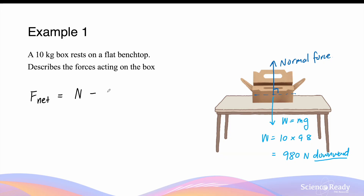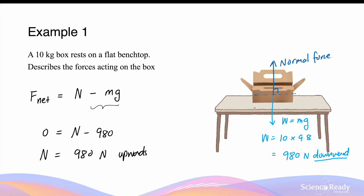The net force is equal to the upward normal force N minus the downward weight force mg. The negative sign in front of mg reflects that forces are vectors with direction — upward forces are positive and downward forces are negative. Because the box is sitting at rest on the bench top and is not moving, the net force on the object is zero. So zero equals the normal force minus 98N, which means the normal force is 98N upwards. If the weight force were greater than the normal force, the bench top would break and the box would fall through.